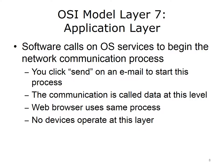In the OSI model, layer 7 is known as the application layer. Software installed in a device calls on OS services to begin the network communication process by converting the software's communication into a format that can be readied for transmission. For example, clicking send in our email example starts this process. Note that the communication is data at this level. A web browser or any network-enabled program goes through the same process every time a user visits a web page. No devices operate at layer 7 because this is where software works on behalf of hardware. Layer 7 is closest to the user, so this is where email is originated.